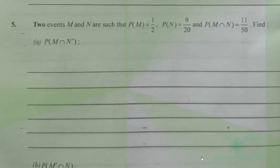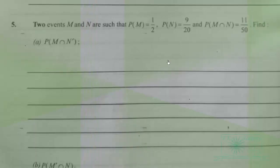WACI 2024 major elective mathematics, question five on probability. Two events M and N are such that probability of M is equal to 1 over 2, probability of N is equal to 9 over 20, and probability of M intersection N is 11 over 50. Find the probability of M intersection N prime and probability of M prime intersection N.